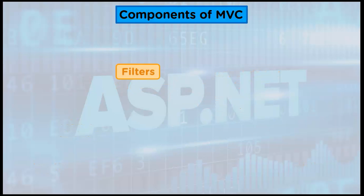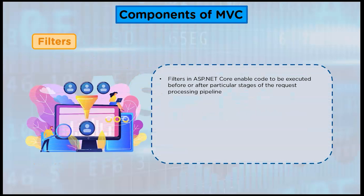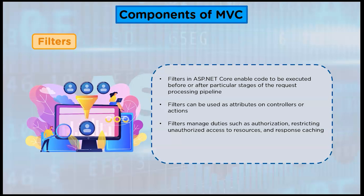Filters in ASP.NET Core enable code to be executed before or after particular stages of the request processing pipeline. Filters can be used as attributes on controllers or actions. Filters manage duties such as authorization, restricting unauthorized access to resources, and response caching. Filters allow for the execution of custom pre- and post-processing logic for action methods and may be configured to run at certain points in the execution pipeline for a given request.